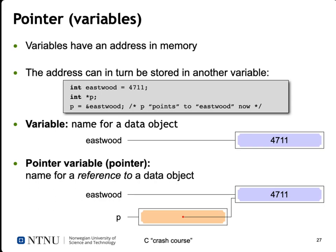In our code example, we have a variable int eastward initialized with the value 4711. The second variable, int asterisk p, declares a variable p which is a pointer to an integer — it contains the address of an integer variable. The third line assigns the memory address at which eastward is located and copies that address into our pointer variable p. A variable is a name for a data object, so eastward names the content 4711, whereas p as a pointer is the name for a reference to the object — it tells us where the object lives, not its contents directly.